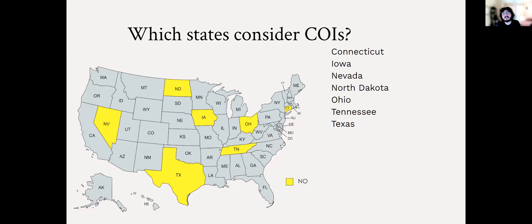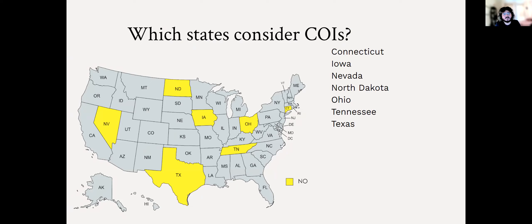Now we have states that do not consider COIs. These states include Connecticut, Iowa, Nevada, North Dakota, Ohio, Tennessee, and Texas. These could be because they have not considered it in the past, or it's explicitly stated that they won't consider it, or they don't include it in the redistricting process at all. Just look out for these states since they will not consider COIs.